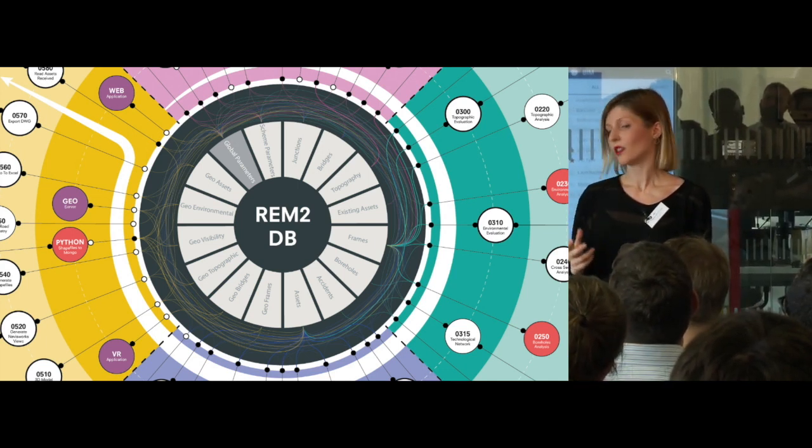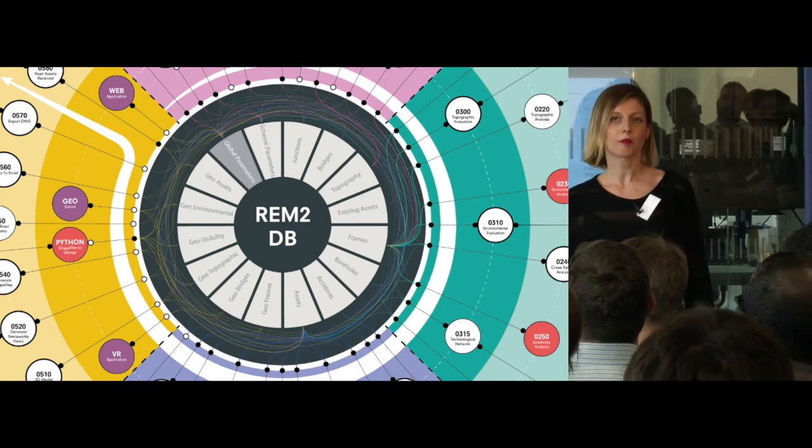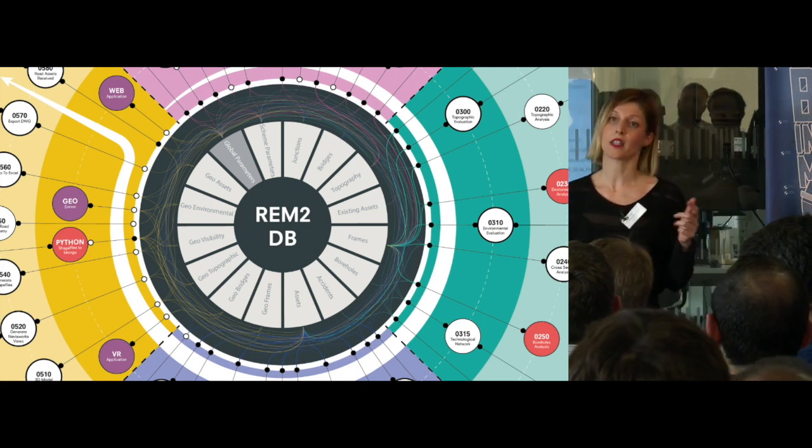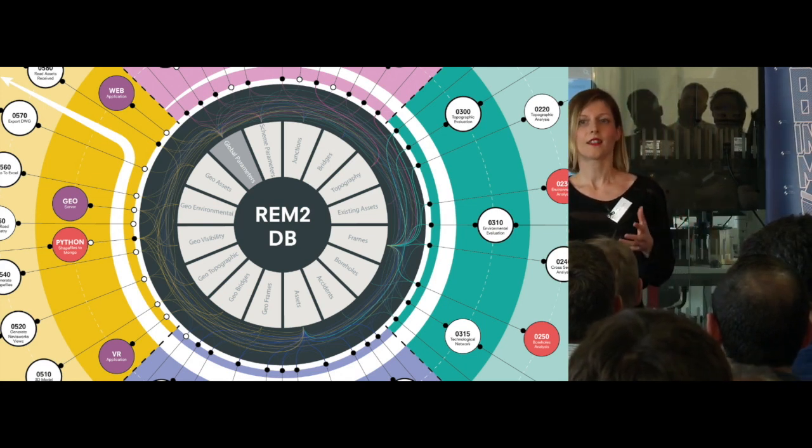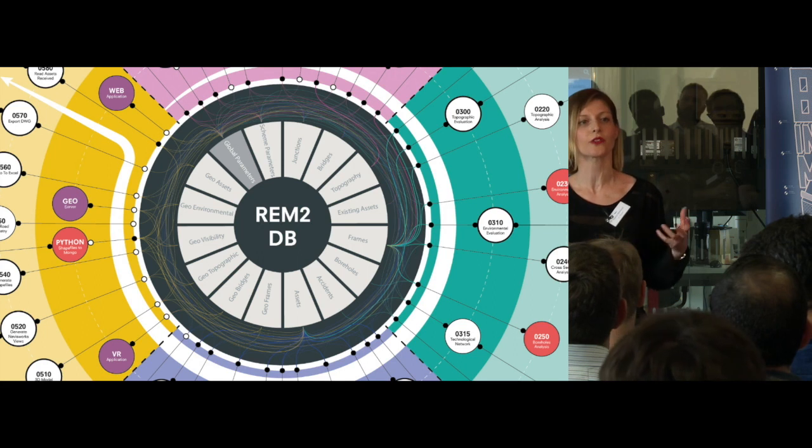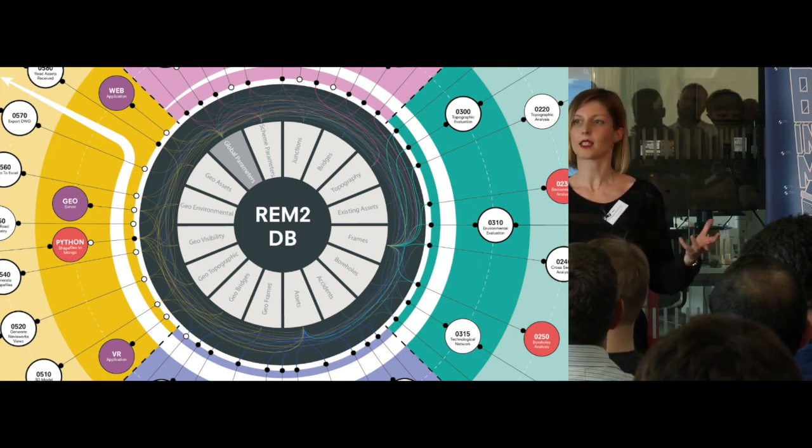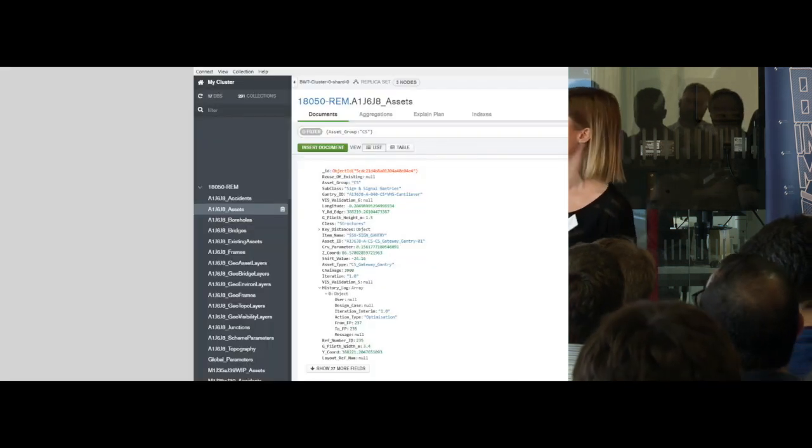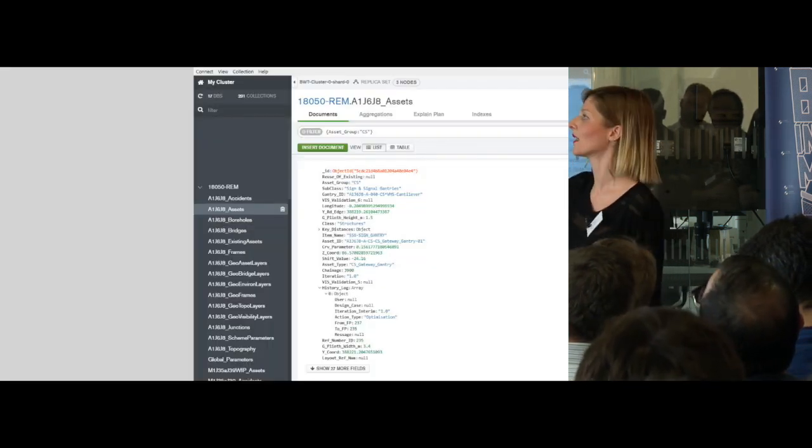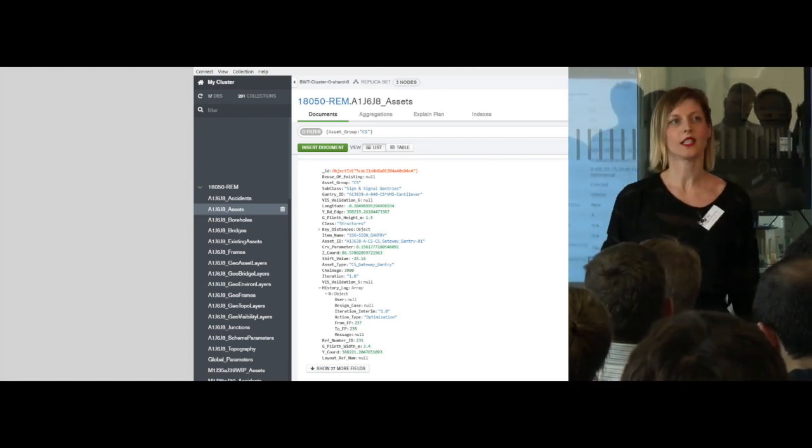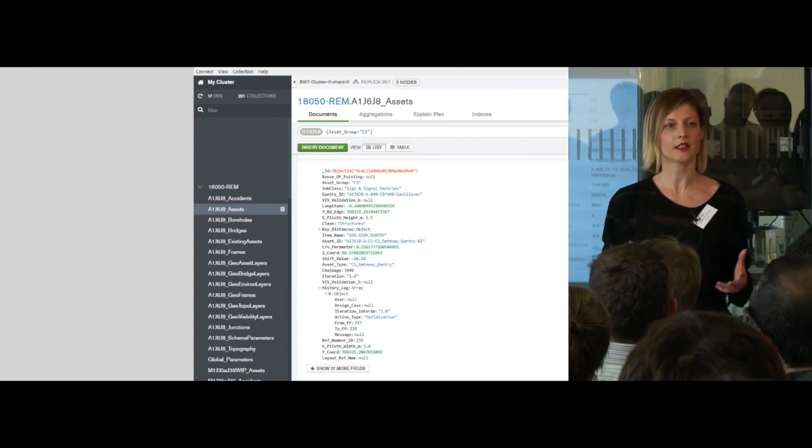The database technology we use for this specific project is MongoDB. That was because during the development of the project, Mongo gives us an agile structure that we can play and work with different forms of data. That gives us the flexibility to test different data sets. And this is actually how Mongo is in reality: we have on the left side different collections that come with series of data, numbers, and text describing the conditions.